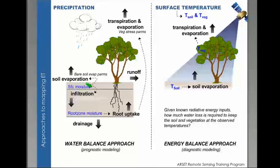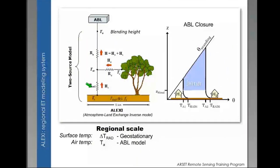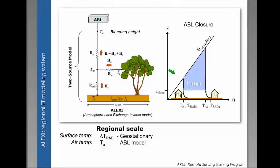This is a rough schematic of the ALEXI system. There are essentially two components: it's based on a two-source energy balance model where the soil and the vegetation are represented separately, and we couple that with an atmospheric boundary layer model. That provides closure so that we don't need an actual observation of air temperature at the blending height. That's what really limits some other methodologies — the single source model or other two-source models — where if you have a disagreement between the temperature at the blending height and your surface temperature observed from satellite, you can have some issues with accurately representing the surface energy fluxes.